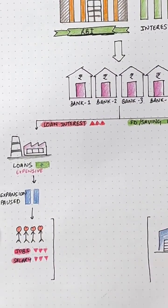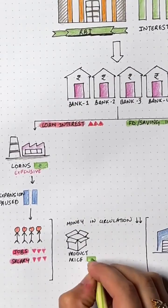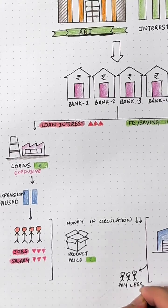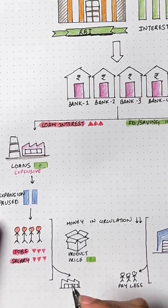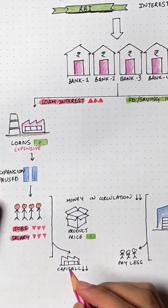This means there is very less money in circulation. Now, let's evaluate what happens to the product prices in this situation. Now, people are willing to pay less and companies also have less capital, which means they also cannot pay for it.